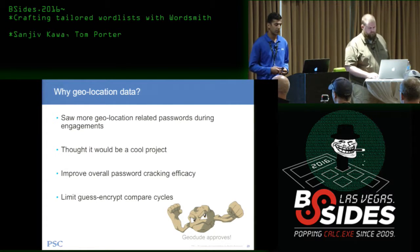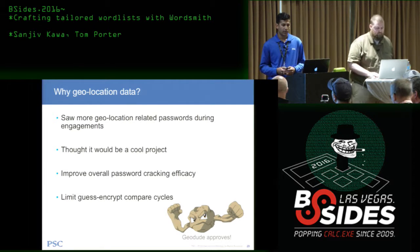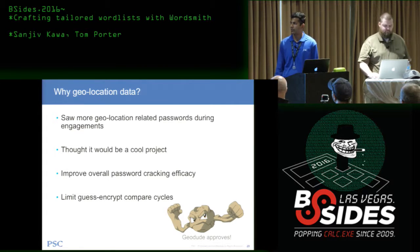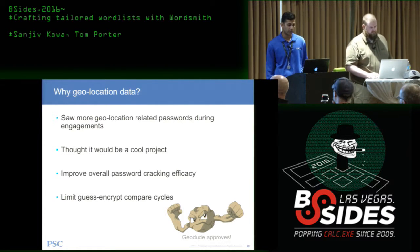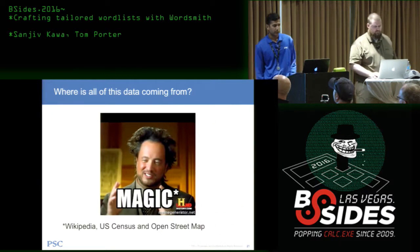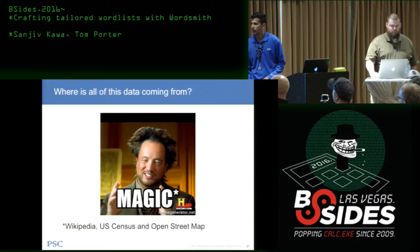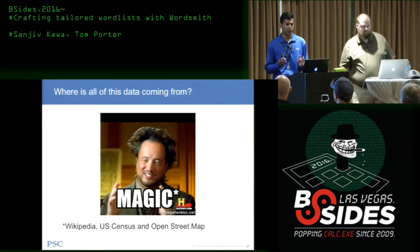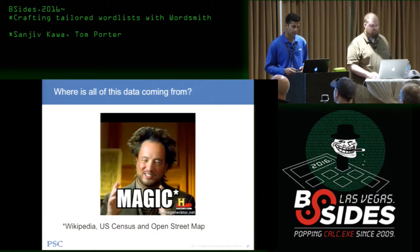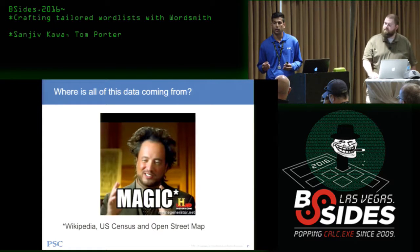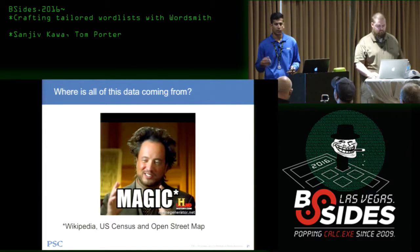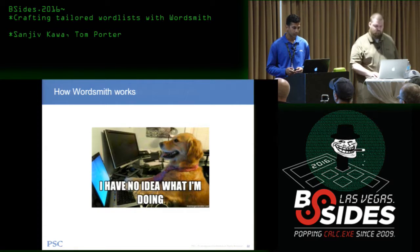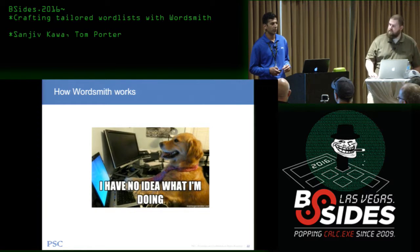It would be neat if someone put together a word list generation tool — so we built one for geolocation data. We found it reduced guess-encrypt-compare cycles and turned out to be quite useful. As for data sources: Wikipedia and the U.S. Census have a ton of this data publicly available. We pulled and scraped it into phrases and words for word lists. OpenStreetMap is another good source. We also built custom data sets for area codes, which required heavier parsing. Then Tom will talk about how WordSmith works, and we'll jump into a demo.